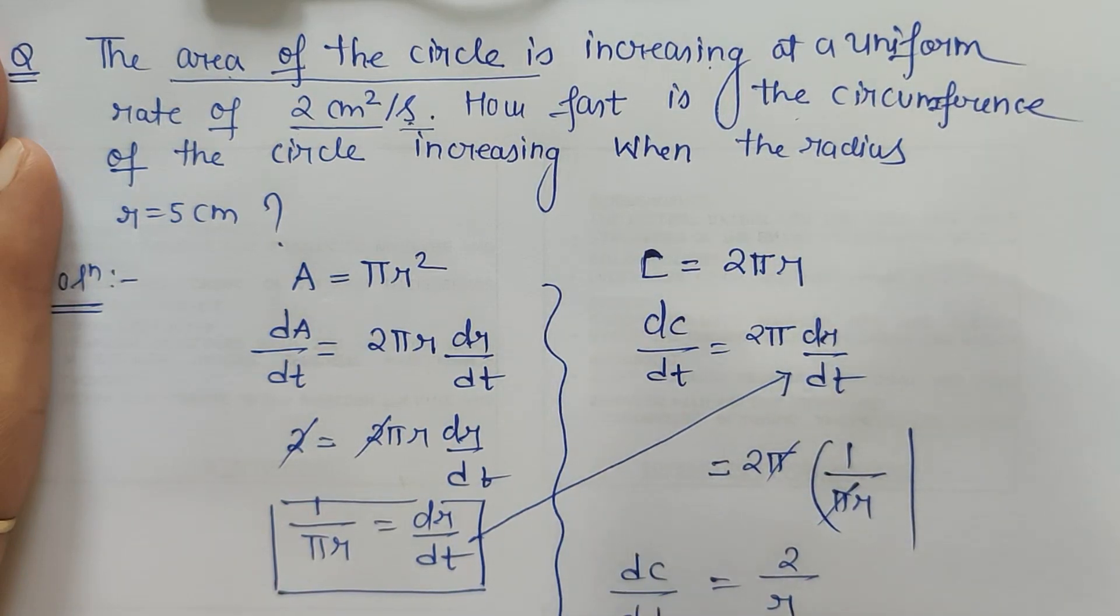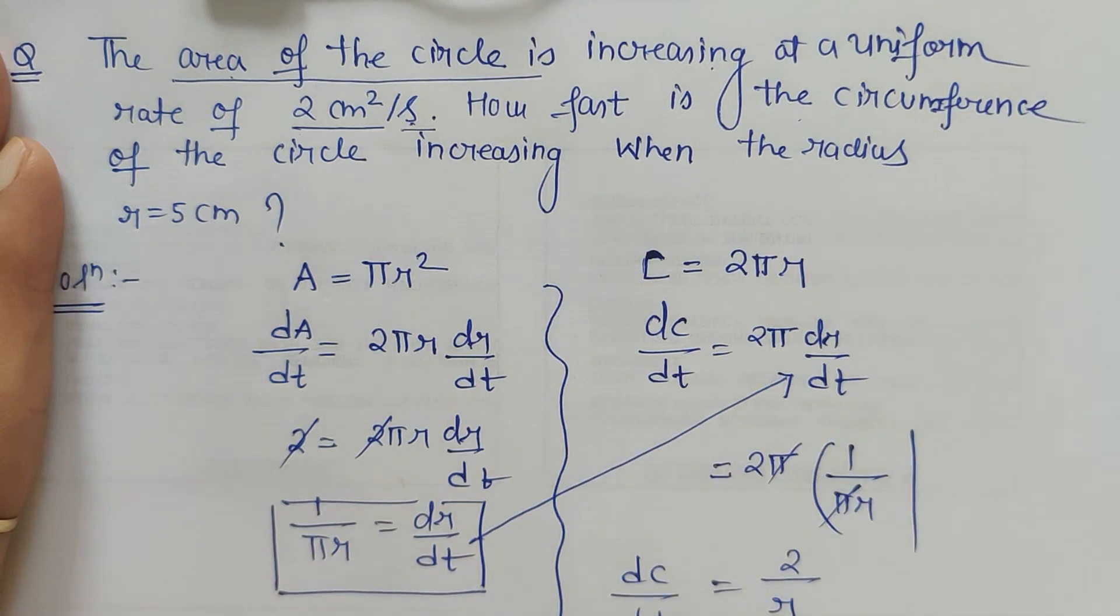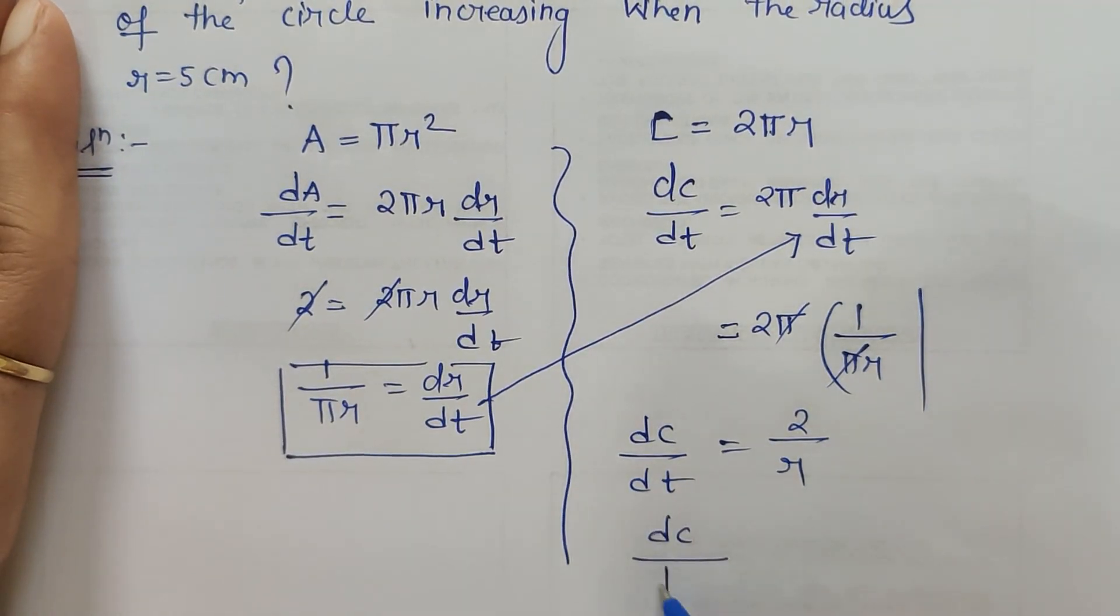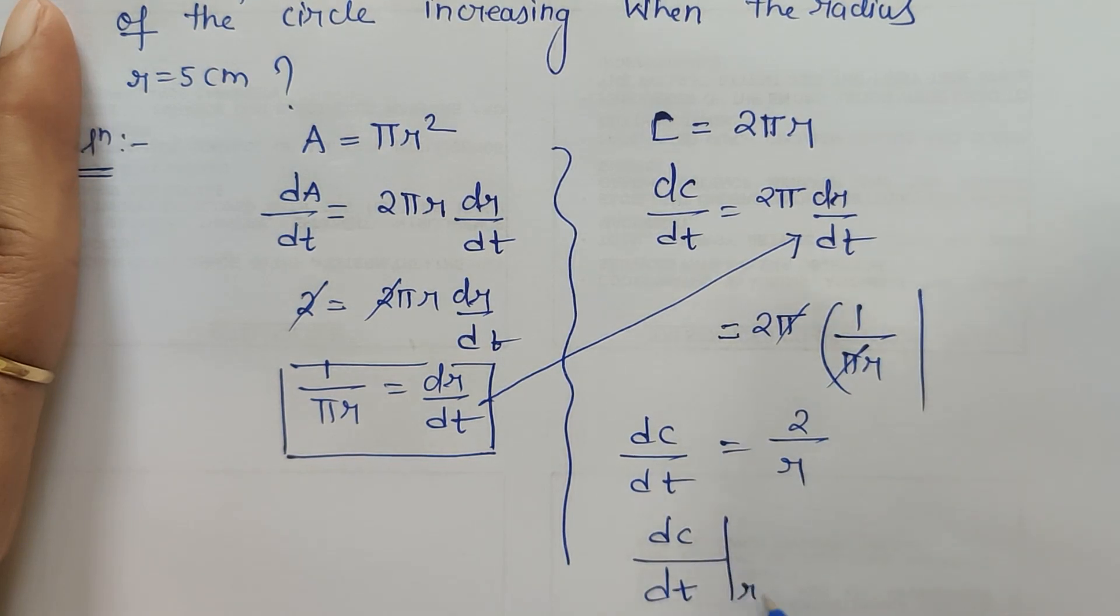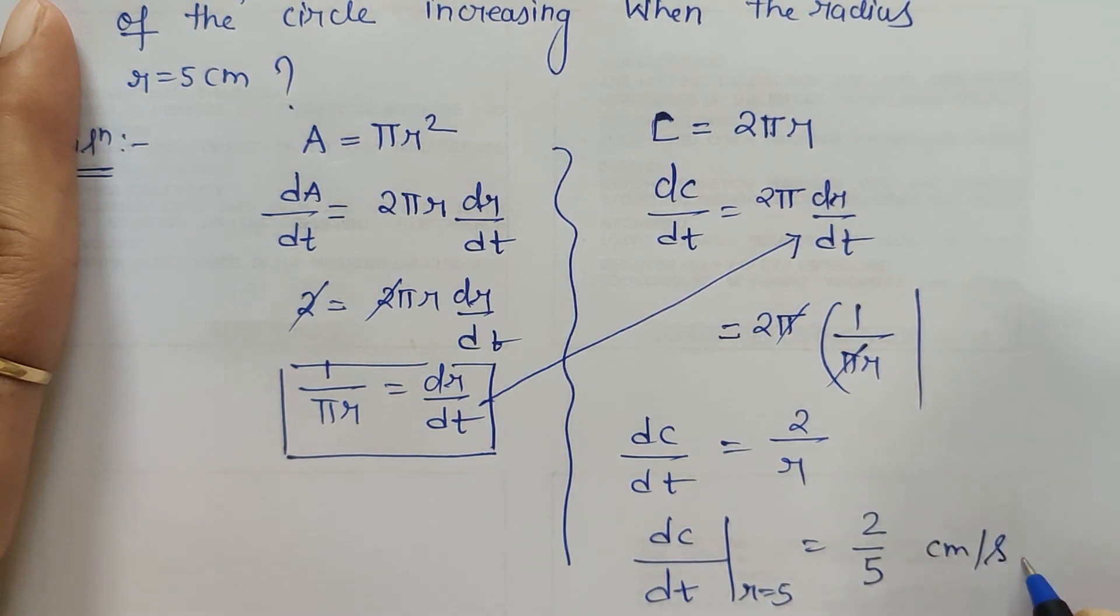We have been asked to find this dc/dt at r is equal to 5, so which gives us 2 upon 5 centimeter per second. This fast the circumference of the circle is increasing when the radius is 5 centimeters.